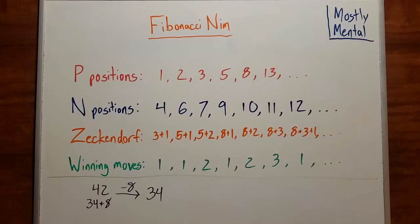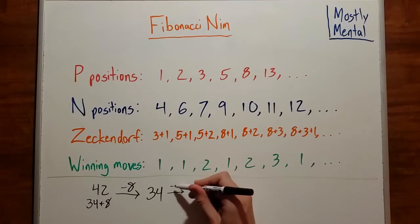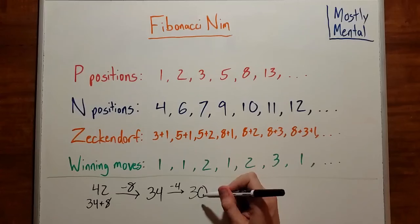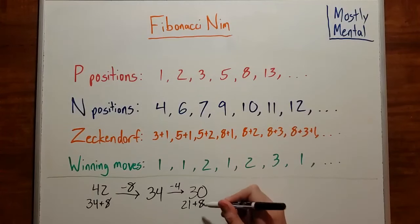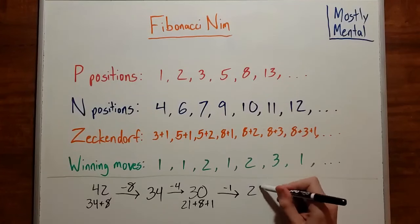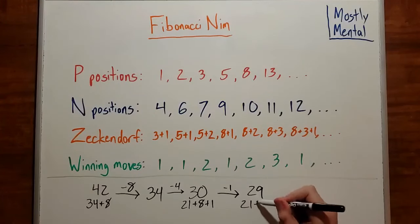And that smallest term, 34, is more than twice 8, so that's not a legal move. So instead, they might do something like take 4 to leave 30, which is 21 plus 8 plus 1. And then we can remove that 1 to leave 29, which is 21 plus 8. And again, the opponent can't remove that 8 because it's more than twice 1. So they have to do something else, like, say, take 1.